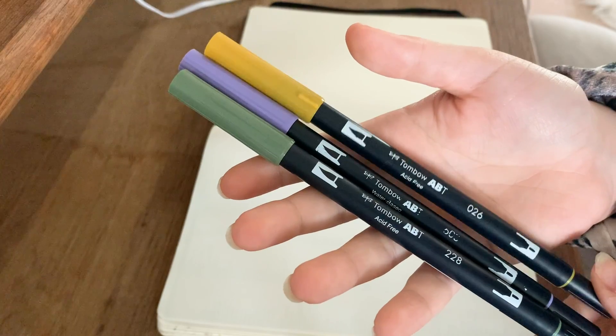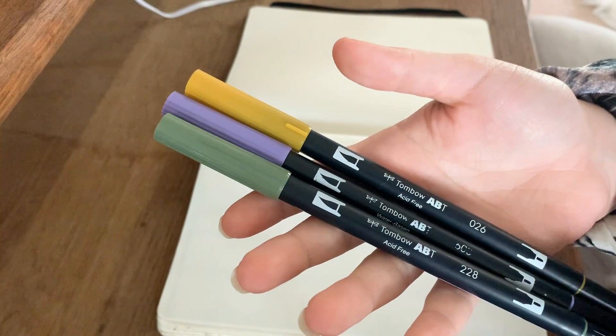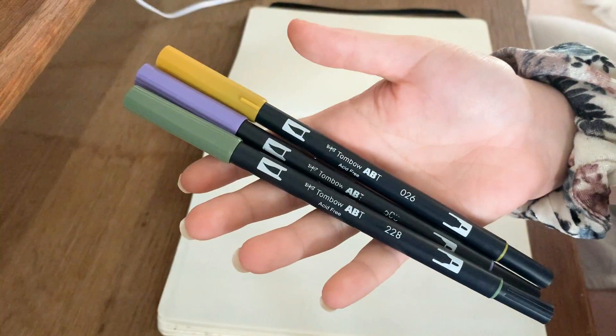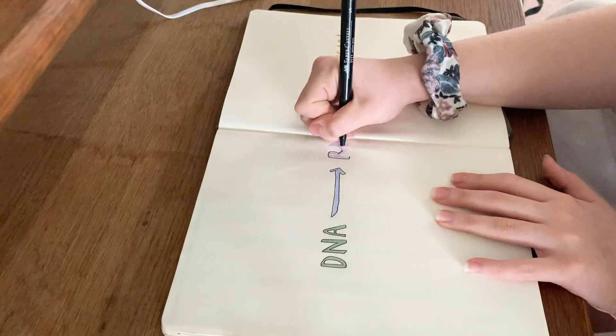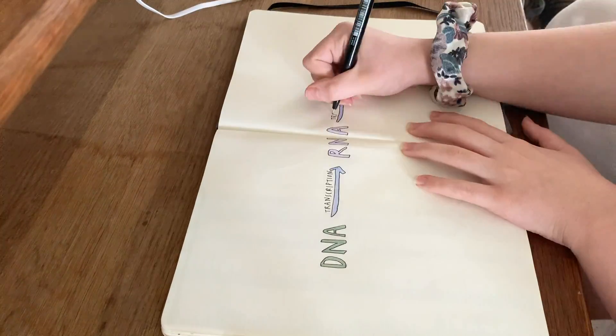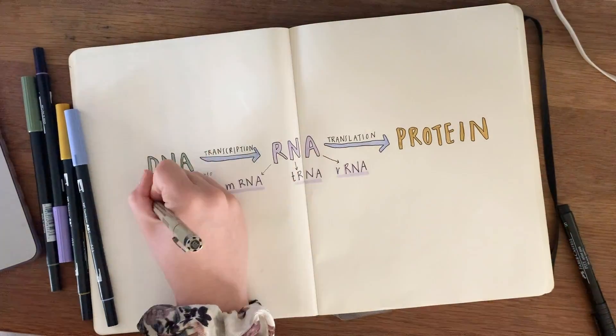Hey my dudes, it's Caitlin and today we're going to be doing a study with me for my fundamental genetics exam. First I'm starting off by making a mind map using the Tombow dual brush pens. I'm going to make this mind map and it's a pretty dense mind map, but before we get into that I have a quick announcement.